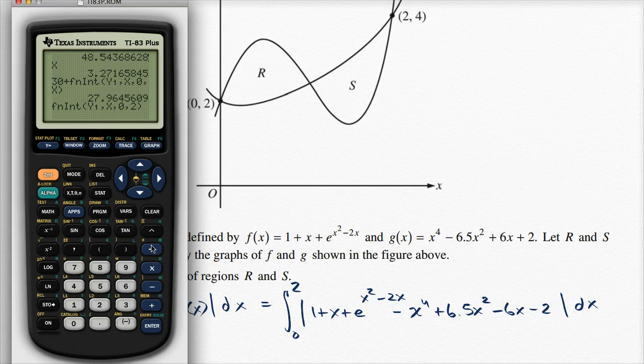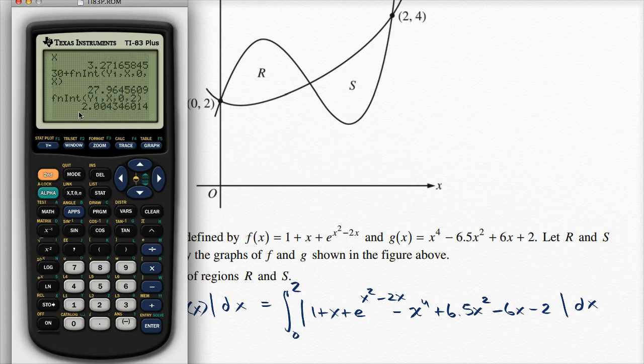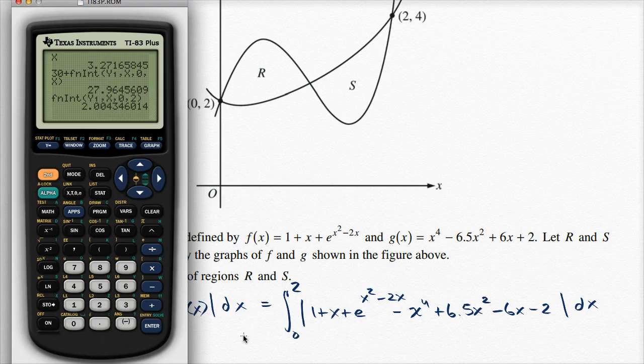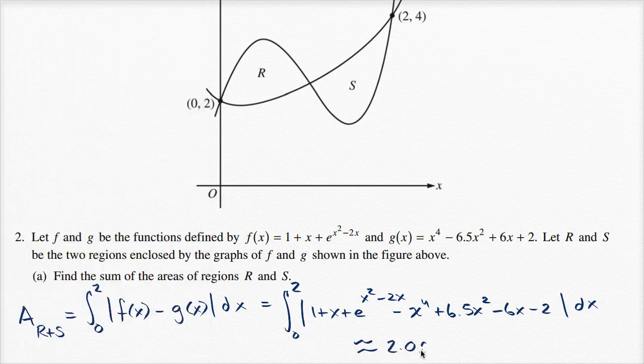And we get—it's taking some time to calculate, it's still munching on it. This is taking a good bit of time. There you go, alright, so it's approximately 2.00. If you want to get a little more precise, 2.004. So this is approximately 2.004.